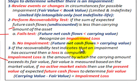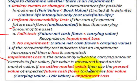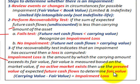If the recoverability test indicates that an impairment has occurred, then a loss is computed. The impairment loss is the amount by which the carrying amount exceeds the fair value. Fair value is measured based on market value. If no active market exists, then use the present value of the expected future cash flows to determine fair value. In our case, we have no active market on this patent, so we'll use present value of expected future cash flows. An impairment loss is simply the carrying value less fair value.